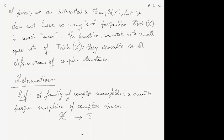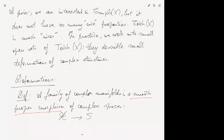Let's talk about deformations. First, a family of complex manifolds is a smooth proper morphism of complex spaces — I'm not asking that the total space or base be manifolds, but I am asking the fibers to be manifolds. Because the morphism is smooth and proper, the fibers are compact complex manifolds.